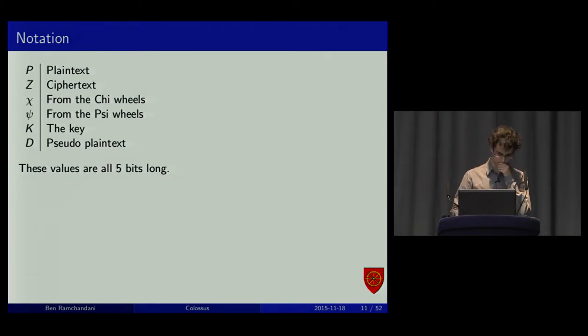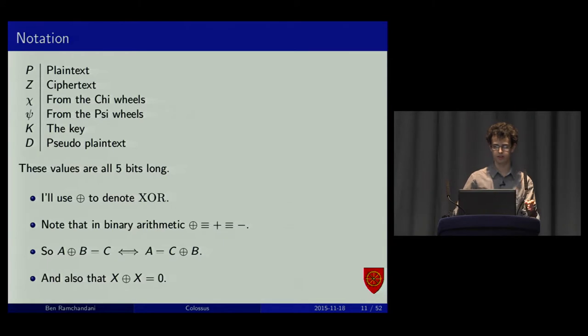We're going to use some notation. You've already seen chi and psi. P is for plaintext. K is for key. Z will be the ciphertext. D is the pseudo plaintext. Don't worry about that yet. I'll use this O plus for XOR. Note that in bitwise arithmetic, you can pretty much anything goes. Addition is effectively the same as subtraction. It's on modulo two. So, you can move algebra around like that. And if you XOR something with itself, it's zero.